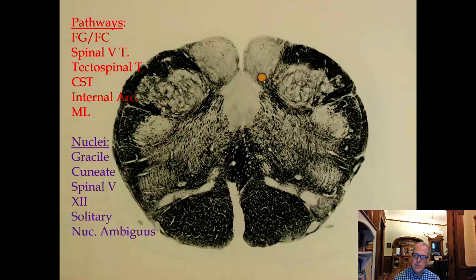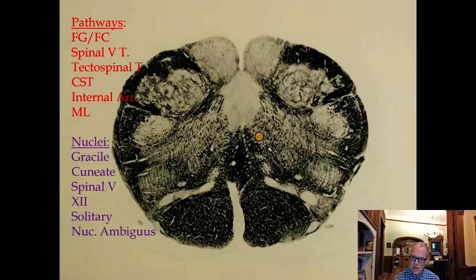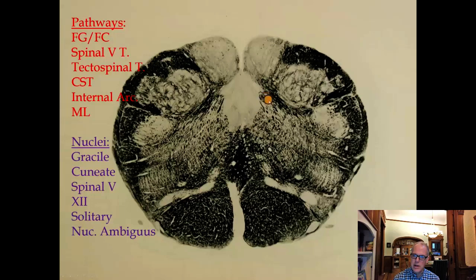We also have the spinal trigeminal nucleus and tract — pain and temperature for the face. A very important midline motor nucleus here is the hypoglossal nucleus, since cranial nerves that divide evenly into twelve are midline. The hypoglossal nerve exits just lateral to the medullary pyramid. As we move up, there's the dorsal motor nucleus of the vagus. Out laterally, the solitary nucleus and tract is an unusual structure — the pathway is dark and the nucleus moves around it.